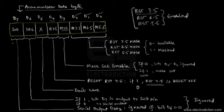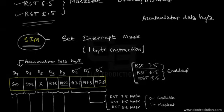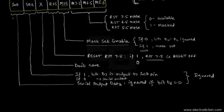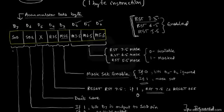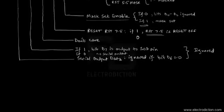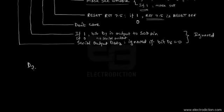After designating the required bits in the accumulator for each bit position, we then declare the SIM instruction to enable the RST interrupts. For an example: suppose we need to keep all interrupts — RST 7.5, 6.5, and 5.5 — enabled. Let's work out the required accumulator byte using this chart.